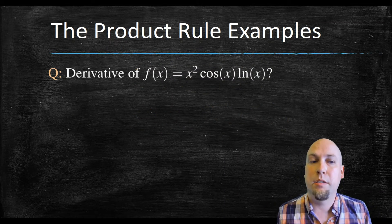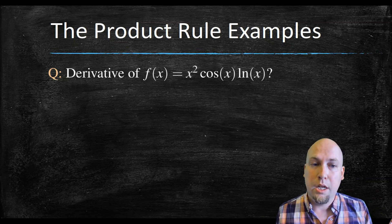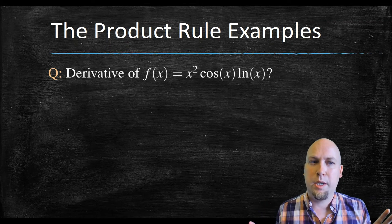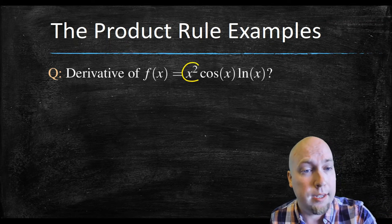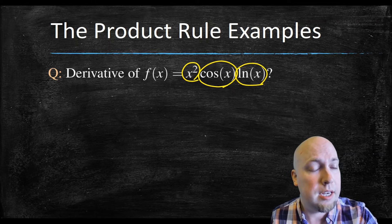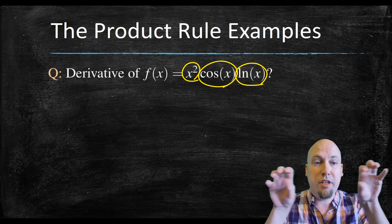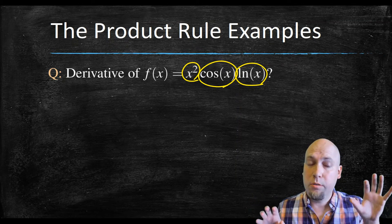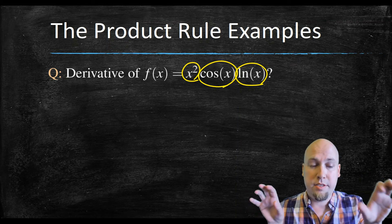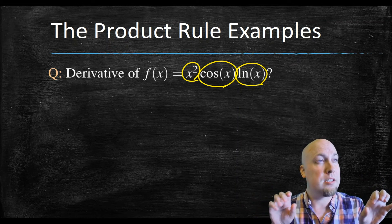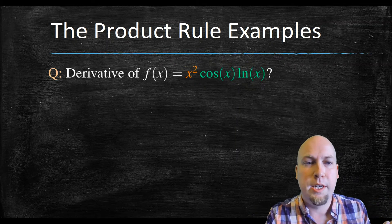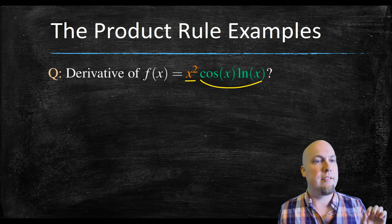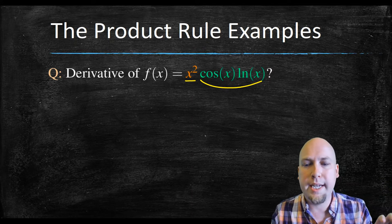Now let's ramp up a little bit — this next example is trickier: x squared times cosine x times ln x. I want to break it down into a product of two functions, but it looks like there are three functions — x squared, cos x, and ln x. The trick is: don't get hung up on that. Just break it into a product of two functions. I'm going to treat x squared as my first function, and cos x times ln x as my second function.